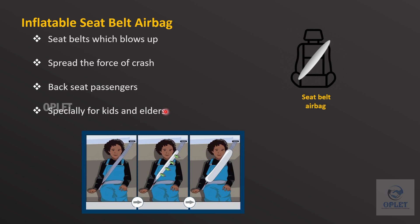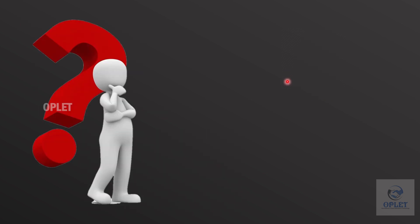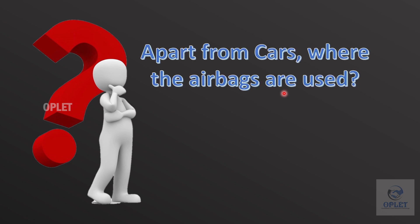So up to now we have explored different types of internal safety airbag models. In the next video we will learn about different types of external safety airbags and their usages. Question for you: apart from automotive cars, where else are airbags used? Drop your answer in the comment section.